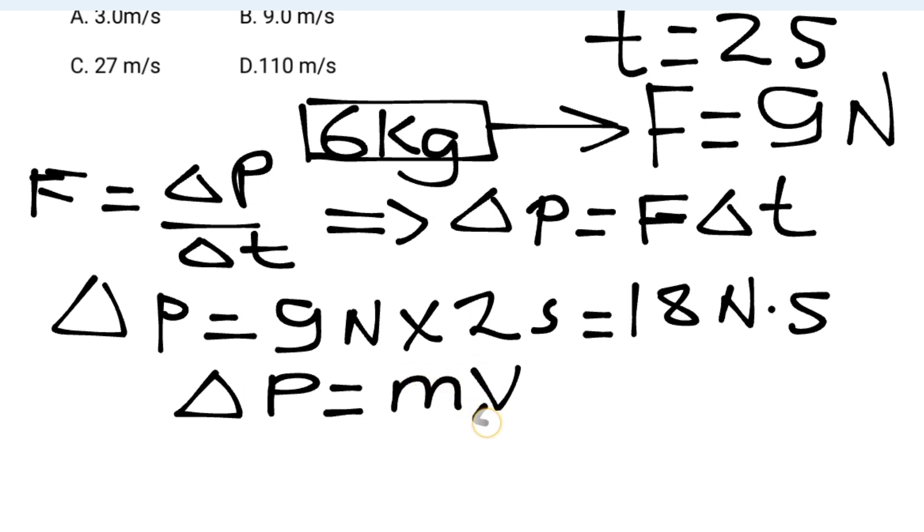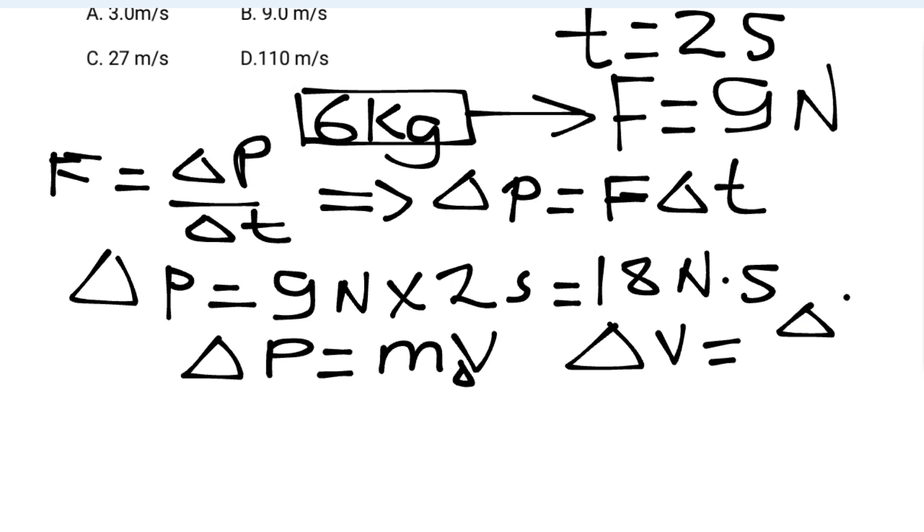So change in momentum equals mass times change in speed. The momentum is mass times speed, so the change in momentum equals mass times change in velocity.